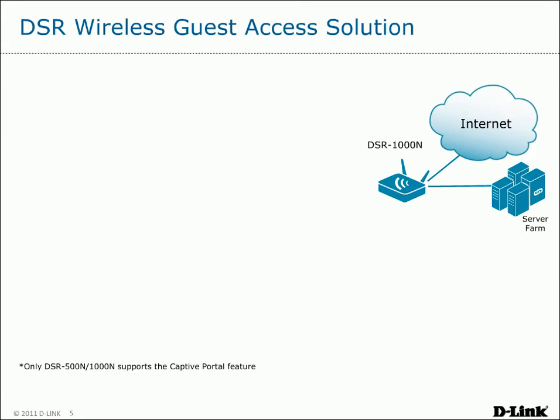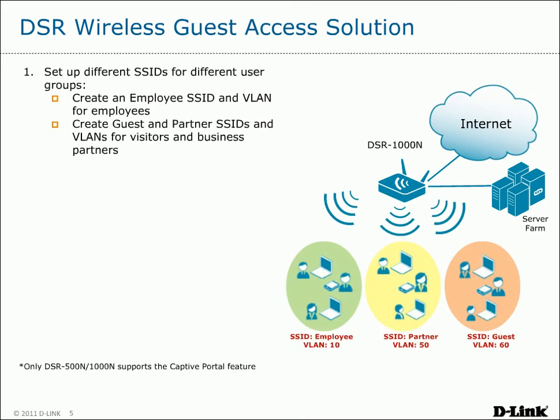D-Link's DSR series of Unified Service Routers can do all of this for you. First, deploy a DSR-1000N and configure different SSIDs for your different user groups. In our example, we have an employee SSID and VLAN for company employees, a partner SSID and VLAN for business partners, and a guest SSID and VLAN for guests. Now we can apply different firewall rules based on the SSID and VLAN combinations.